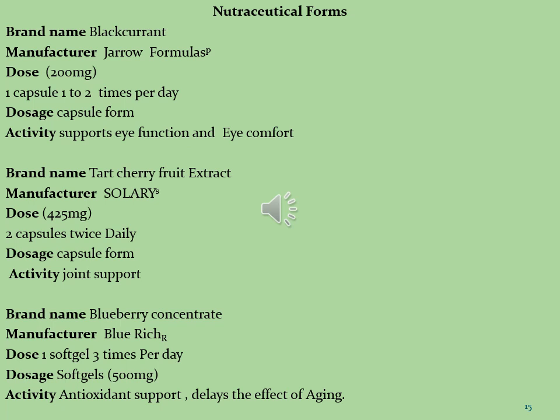Pharmaceutical brands in which anthocyanins are used as active extracts: the first product is Black Grant, manufactured by Gaia Formulas, dose 200 mg per day, one capsule one to two times per day in capsule form, used to support eye function and eye comfort. The second product is Tart Cherry Food Extract, manufactured by Solgar, dose 25 mg per day, two capsules twice daily in capsule form, used to enhance joint support. The third product is Blueberry Concentrate, manufactured by BluRich, dose 500 mg per day in soft gel capsules, used as an antioxidant and to delay the effects of aging.